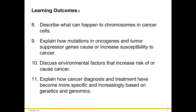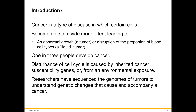We have more to cover in this chapter. You will be able to describe what can happen to chromosomes in cancer cells, explain how mutations in oncogenes and tumor suppressor genes cause or increase susceptibility to cancer, discuss environmental factors that increase risk or cause cancer, and explain how cancer diagnosis and treatment have become more specific and increasingly based on genetics and genomics. So we're going to start with the introduction.